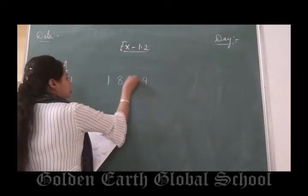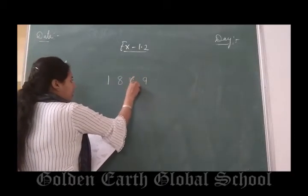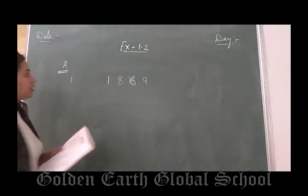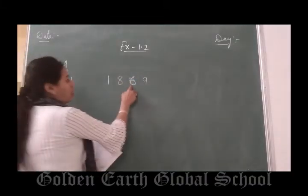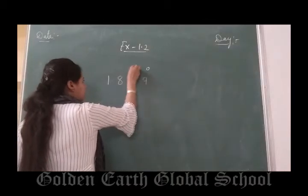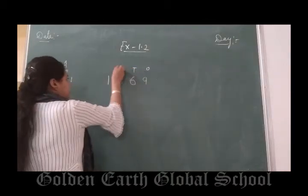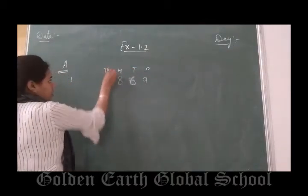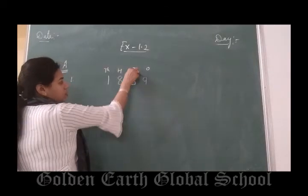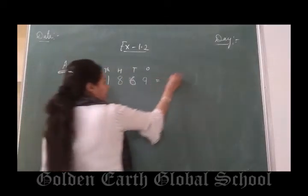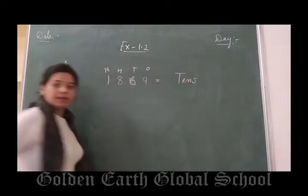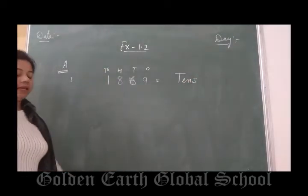You have to find the place of digit 6. You will write here. The places are: 1s, 10s, 100, 1000. Which place is digit 6 on? Tens. You will write here: 10s. Clear?